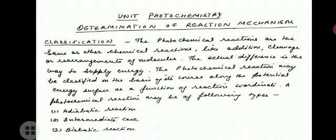Now let us begin with the classification part. Photochemical reactions are the same as other chemical reactions — like addition, cleavage, rearrangement of molecules, etc. The actual difference is the way energy is supplied. Photochemical reactions may be classified on the basis of their course along the potential energy surface as a function of a reaction coordinate. A photochemical reaction may be of the following types: first, adiabatic reaction; second, intermediate case; and third, diabatic reaction.